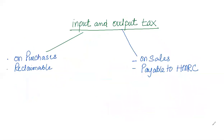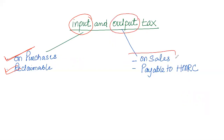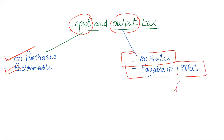Regarding input and output VAT: input VAT is applicable on purchases. For example, if a business purchases goods from another business, the purchaser pays input tax, and if that purchaser is tax registered, the business can claim back the VAT paid — it is a refundable amount. Input tax is usually refundable, though in some cases it may not be. Output VAT is applicable on sales — if a business sells goods and services, an output tax charge is applicable and it is payable to HMRC, meaning output tax is a liability.